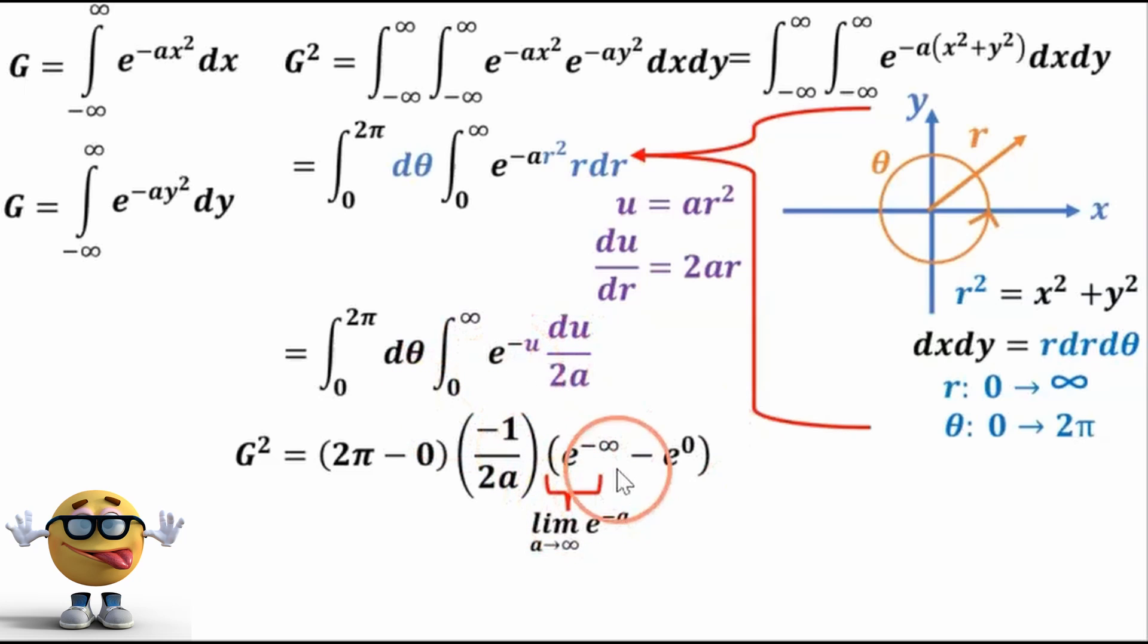And this part here, mathematicians would rather not see an infinity in the exponent. So you could write it maybe more correctly as the limit as a goes to infinity of e to the negative a right here. At any rate, as we approach infinity, this is going to go to 0. Because this negative puts the whole thing in the denominator. And then any number to the power of 0 is just 1.